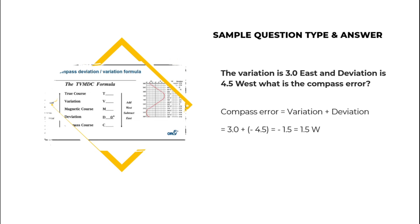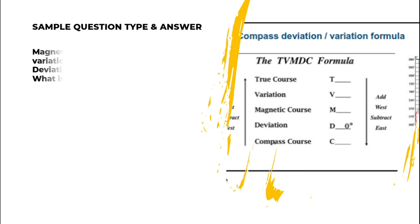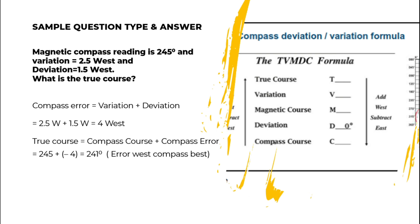Next sample question: The variation is 3° East and the deviation is 4.5° West. What is the compass error? Compass error equals variation plus deviation. Variation is 3° East and deviation is 4.5° West, so the result is minus 1.5°, or 1.5° West. This is the compass error.